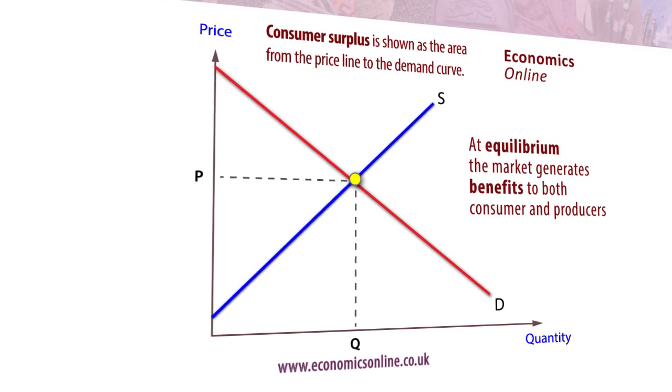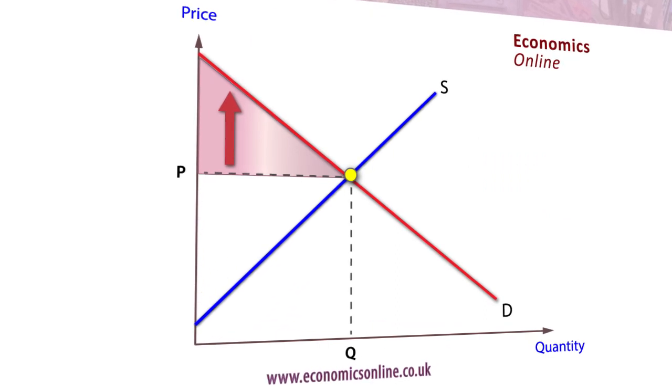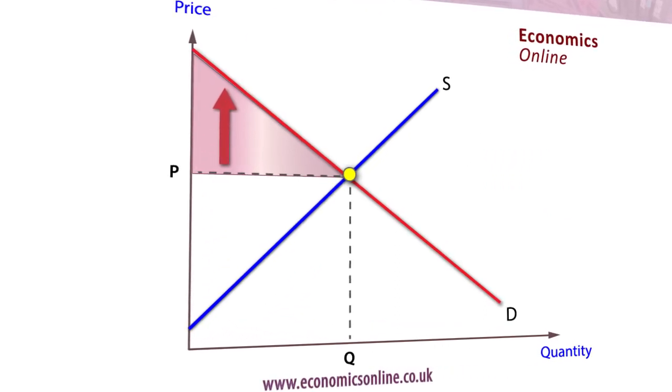The price they are prepared to pay is reflected in the downward sloping demand curve. Graphically, it is the area from the price line up to the demand curve.